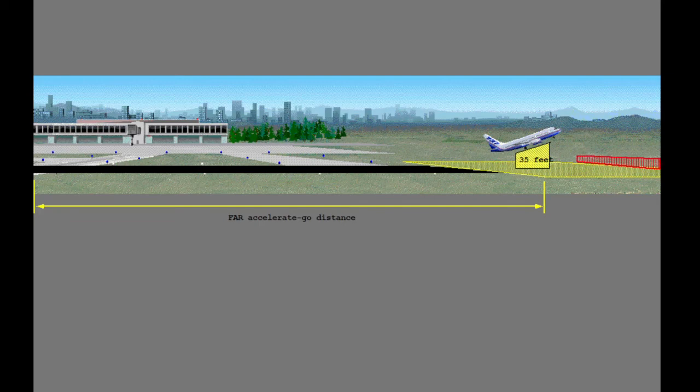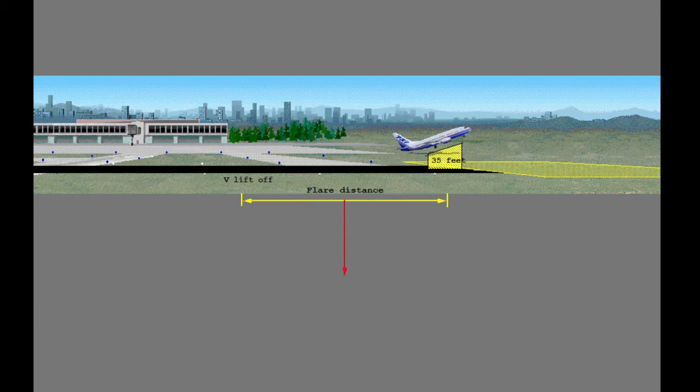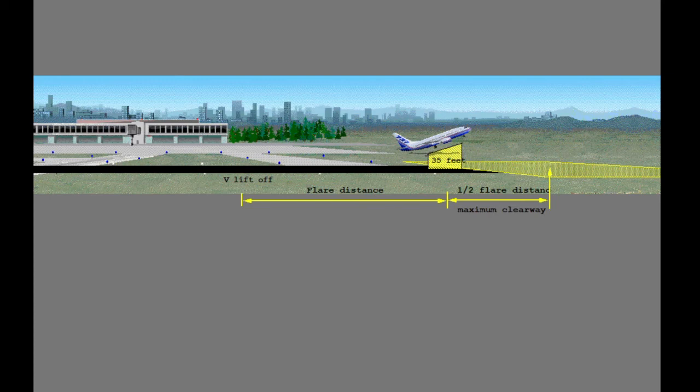Regulations do restrict the amount of clearway that may be used, defined in terms of the flare distance of the airplane. The flare distance is the distance along the ground from the point where the airplane is at the lift-off speed to the point where the airplane is 35 feet above the runway. Regulations limit the amount of clearway that may be used to one half of the flare distance. Regulations do not allow the use of clearway when calculating wet runway takeoff performance.